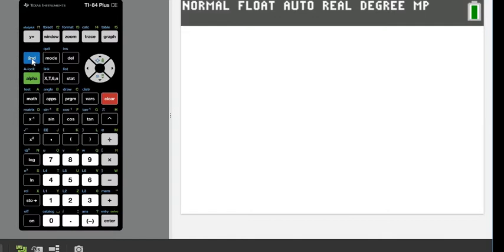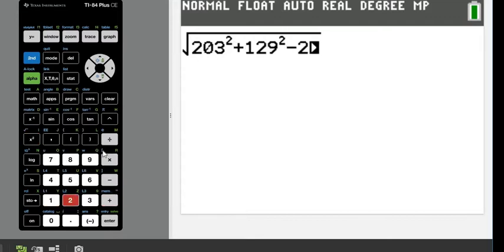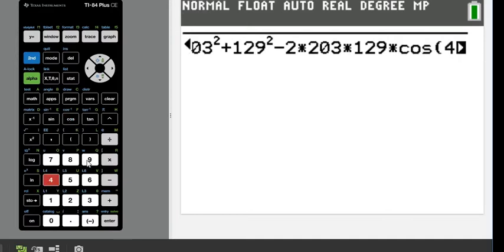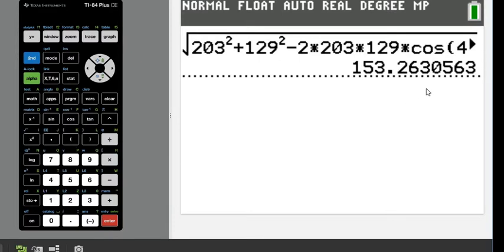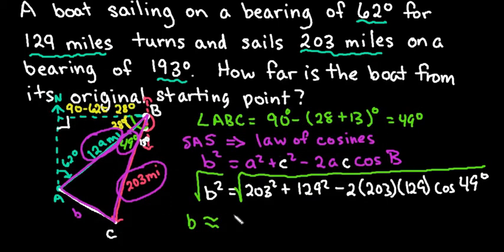I'm using the TI-84 graphing calculator. You can use any type of scientific or graphing calculator to find your answer. I'm going to do the second of the square root, then 203² plus 129² minus 2 times 203 times 129 times cosine of 49 degrees. Make sure before you hit enter that your mode is set up in degree mode and not radians. If you're in radians, you will get the wrong answer. When we solve this, we end up with 153.263 approximately.